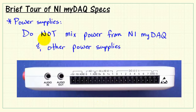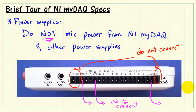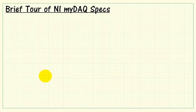Do not mix power from NI-MIDAC and other power supplies. If you're connecting MI-DAC to other circuits and systems that have their own power supply, you will need to establish connections between the grounds of MI-DAC and the other system. But when you do so, do not connect the plus-minus 15 volts and 5 volt outputs from MI-DAC.